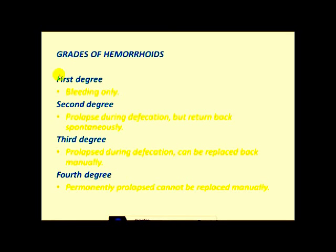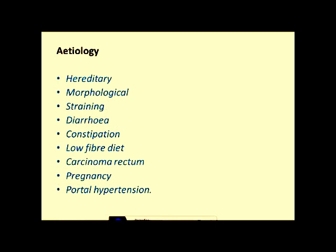There are four grades of hemorrhoids. First grade: there is only bleeding. Second grade: prolapse during defecation but returns back spontaneously. Third degree: prolapse during defecation but can be replaced back manually by the patient. Fourth degree: permanently prolapsed and cannot be reverted back manually.